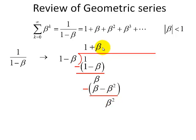And then we're going to add in the quotient a beta squared term. Multiply beta squared with 1 minus beta. And we have quantity of beta squared minus beta cubed. When we finish the subtraction here, we have a beta cubed. And you can see the pattern here where we add beta cubed here in the quotient.